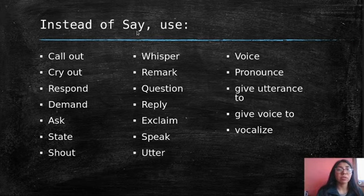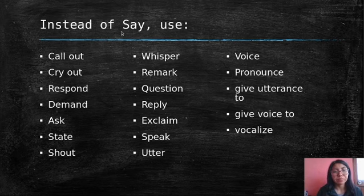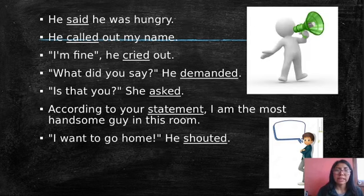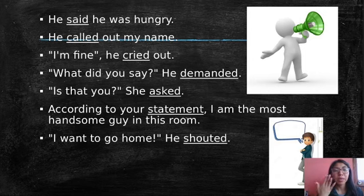All of these words are synonyms of 'say.' We are going to review some examples in order to understand better the use. Here we have the most common: 'say.' He said — 'said' is the past form of the verb 'say.' For example: 'He said he was angry.' That is the most common word that you use.